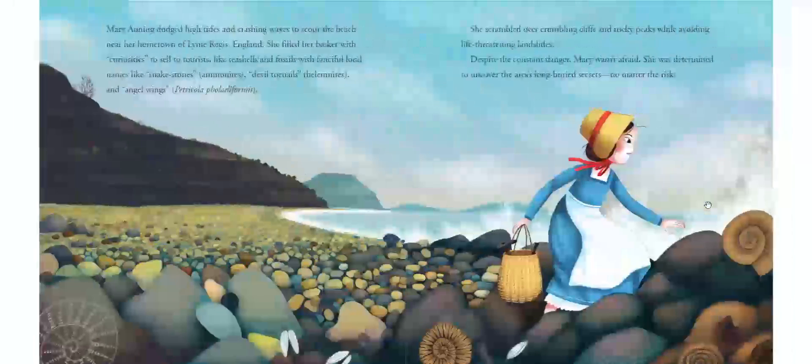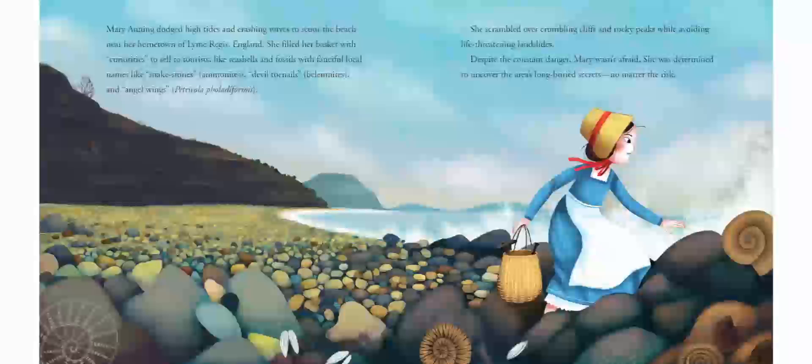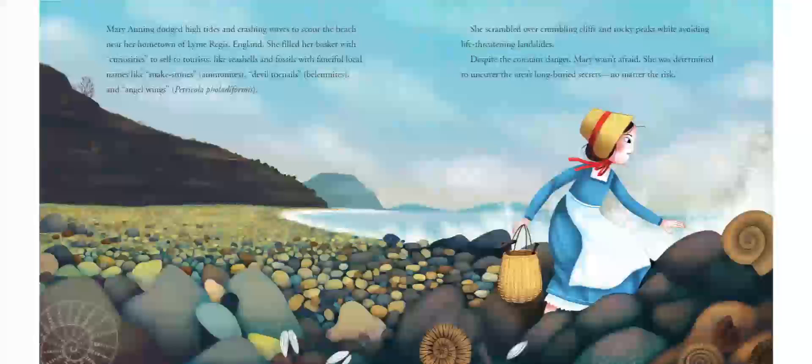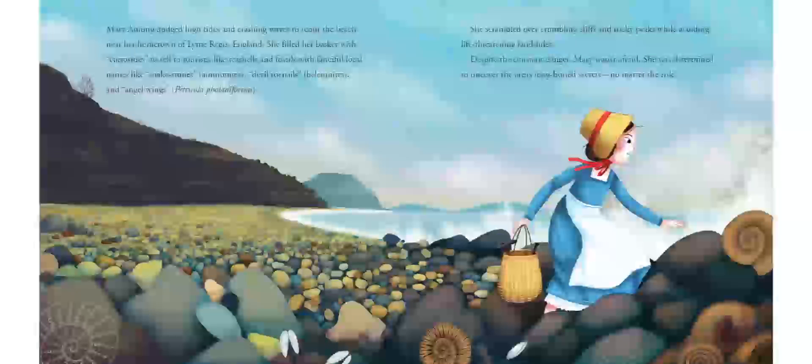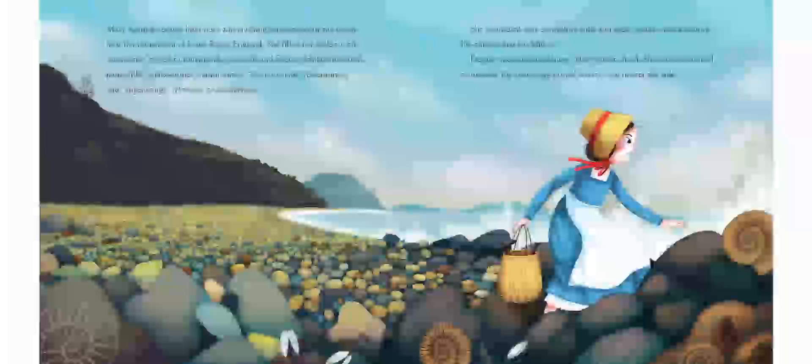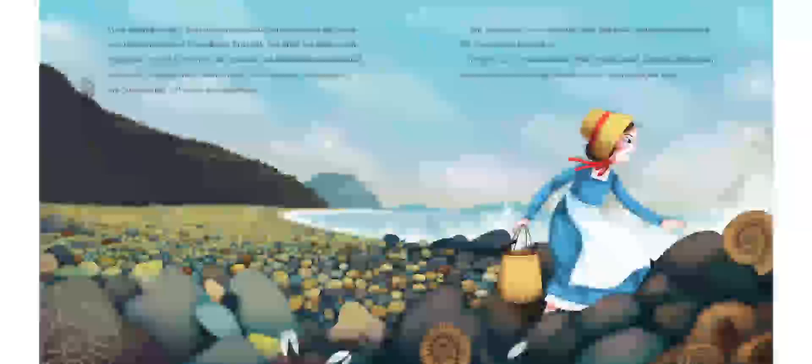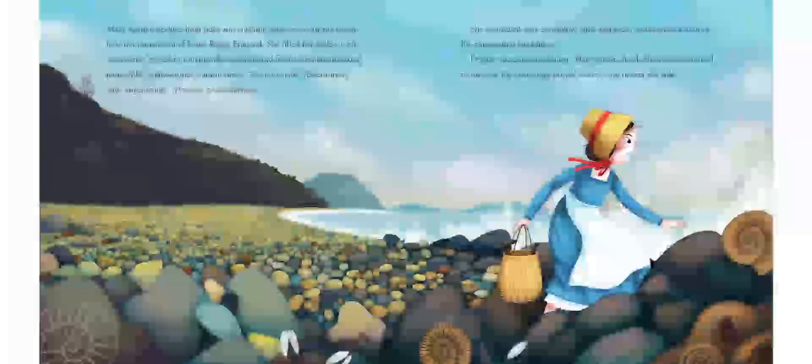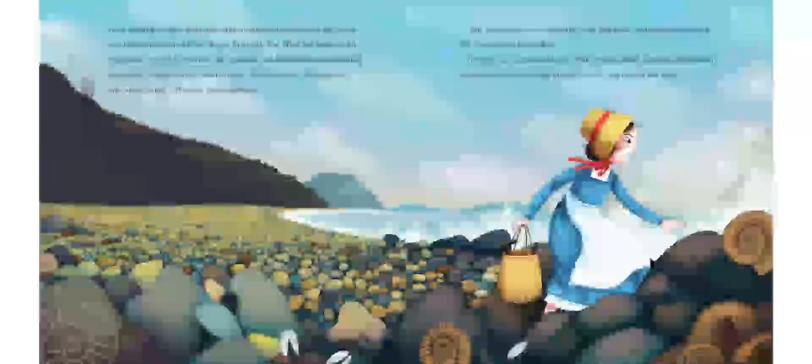Dinosaur Lady. Mary Anning dodged high tides and crashing waves to scour the beach near her hometown of Lyme Regis, England. She filled her basket with curiosities to sell to tourists like seashells and fossils with fanciful local names like snake stones, which were ammonites, devil toenails, belemnites, and angel wings.